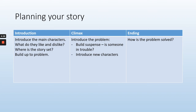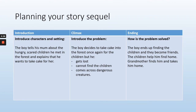Fantastic. Now, lastly, you're going to talk about how your problem is solved. Underneath ending, you're going to talk about how the boy gets out of the trouble that he's in. Press pause while you write two sentences about that and press play when you're ready to continue. Fantastic. So let's just check again. This is the narrative structure: introduction, climax, ending.